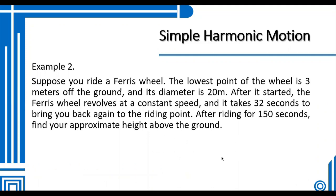Next example: Suppose you ride a Ferris wheel. The lowest point of the wheel is 3 meters off the ground, and its diameter is 20 meters. After it's started, the Ferris wheel revolves at a constant speed and it takes 32 seconds to bring you back again to the riding point. After riding for 150 seconds, find your approximate height above the ground.